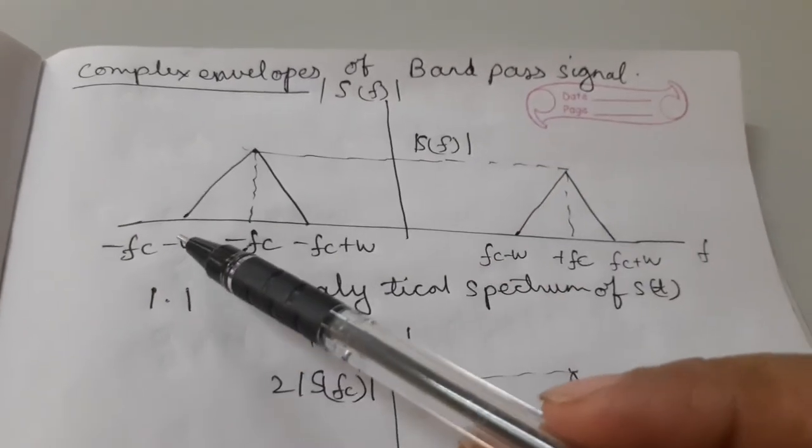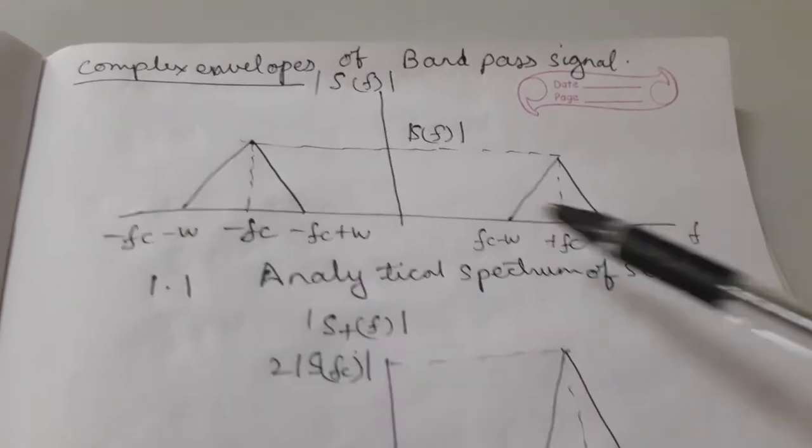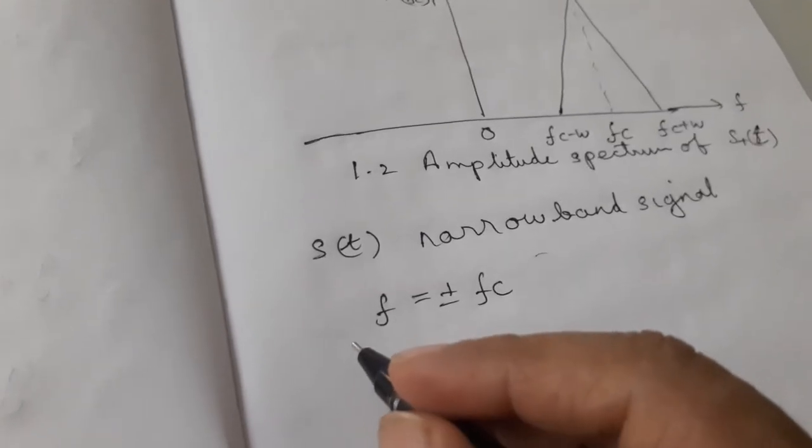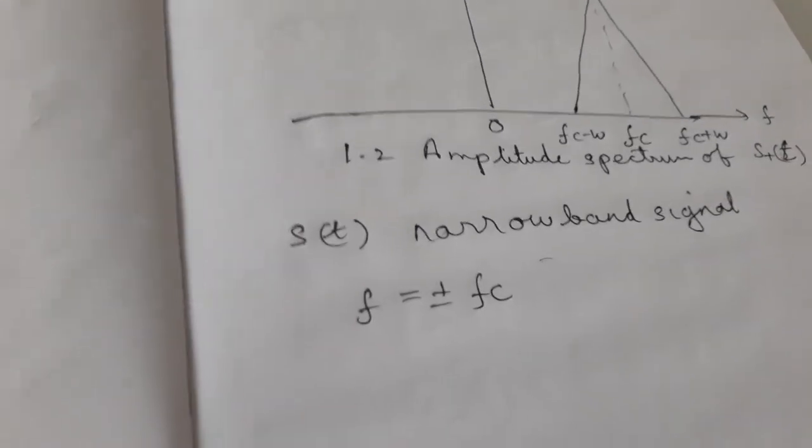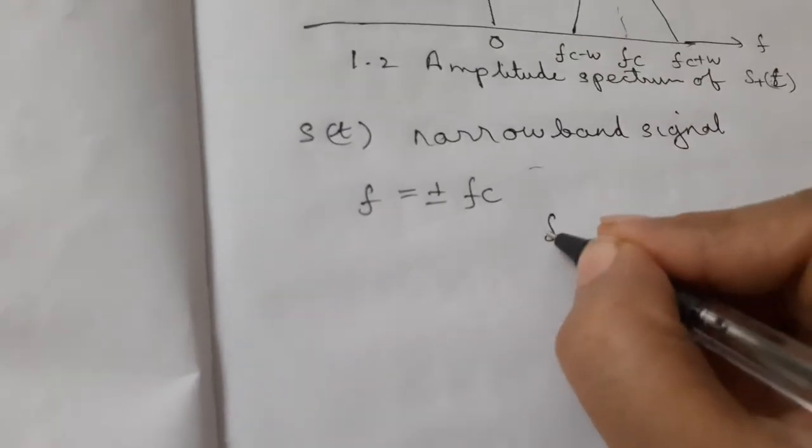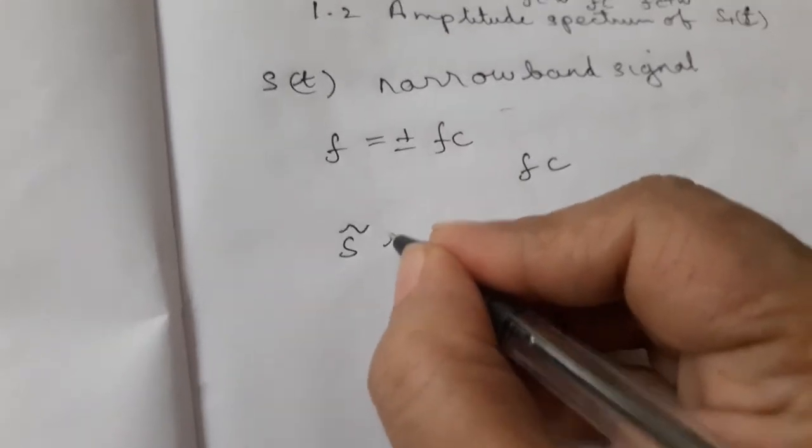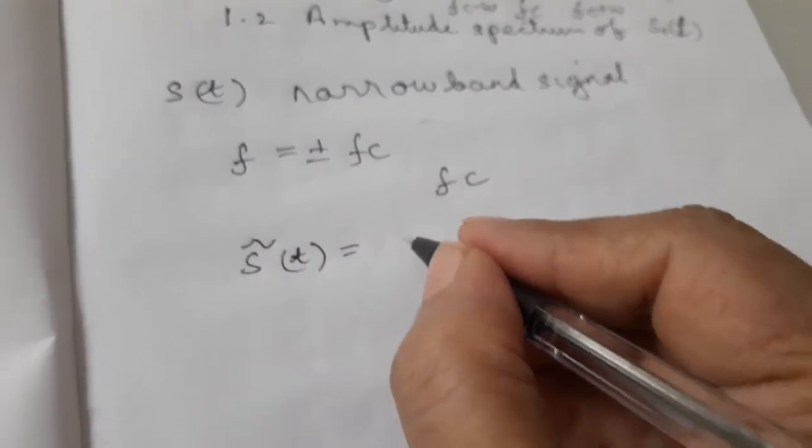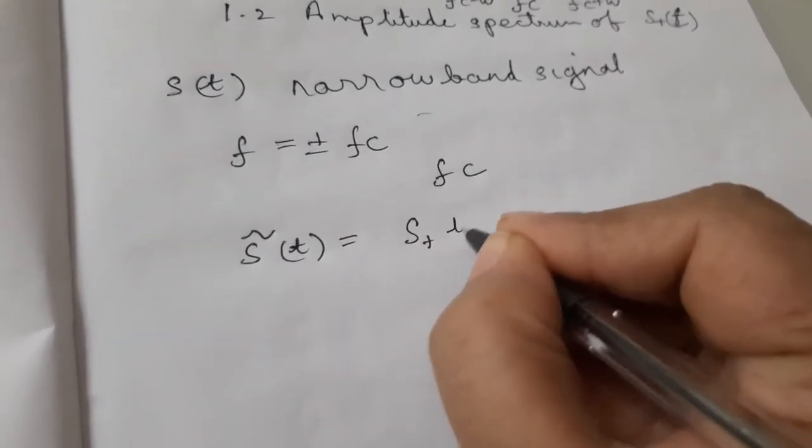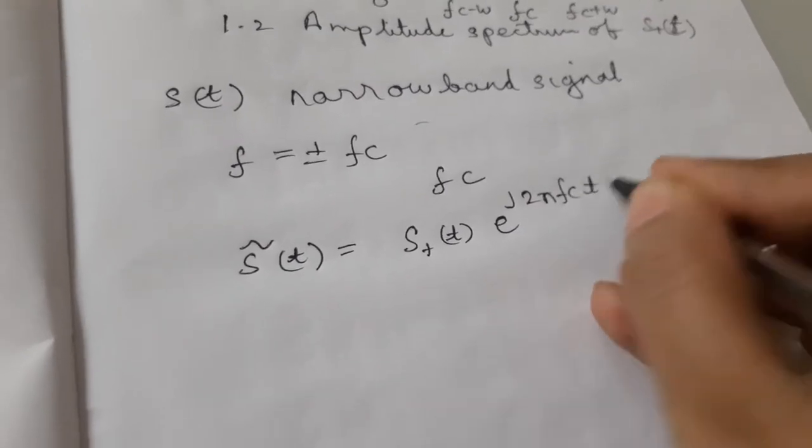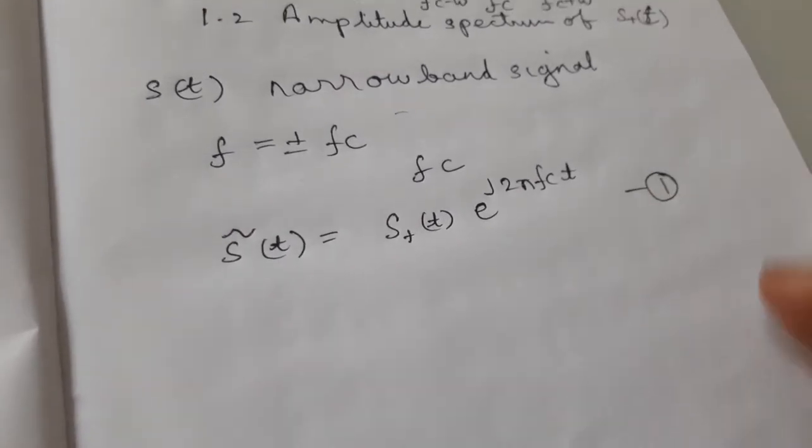You can see the spectrum is centered at plus minus fc. Now, how is the complex envelope defined in comparison of the phases? At a given frequency fc as S tilde of t, it is represented by tilde S of t. It can be S plus of t exponential j 2 pi fc t. Let this be the first equation.